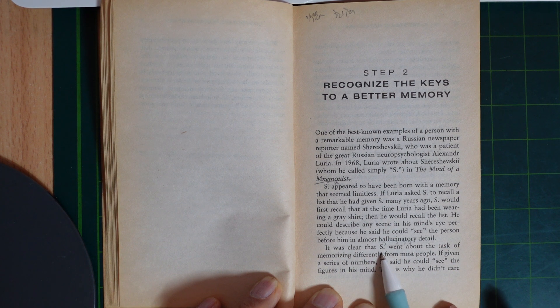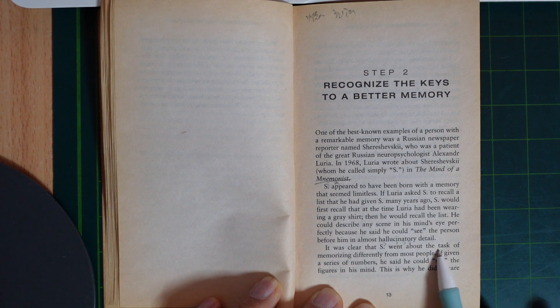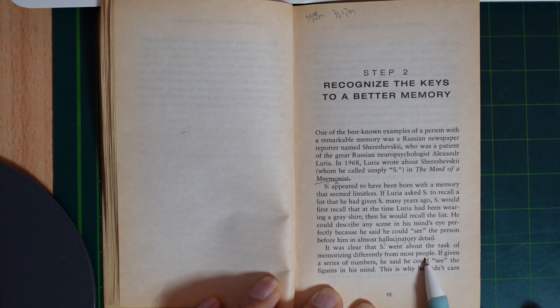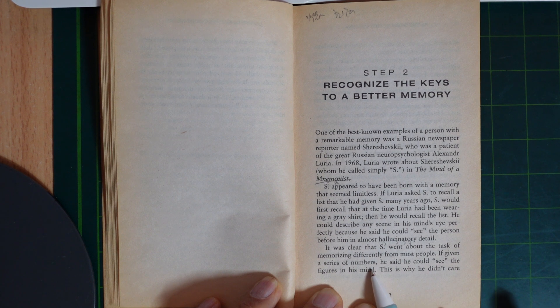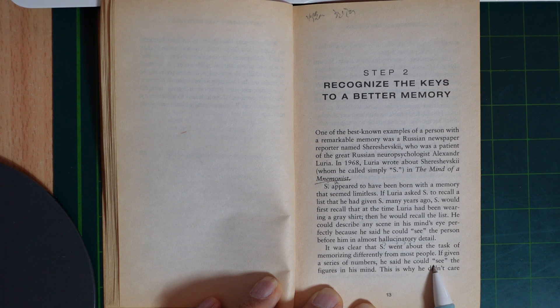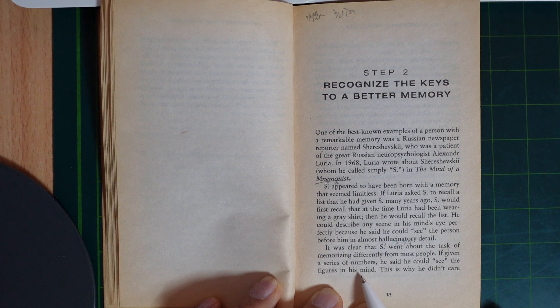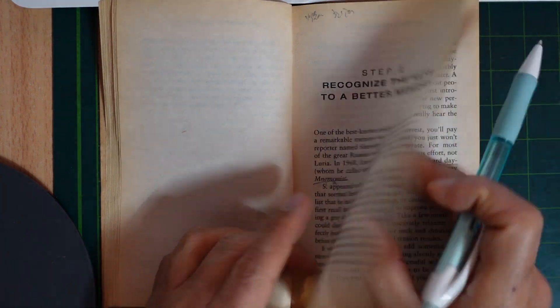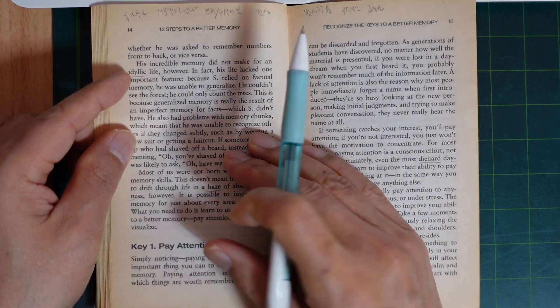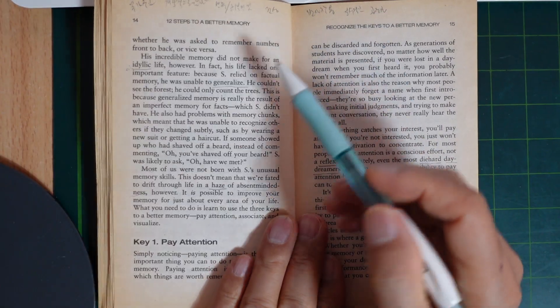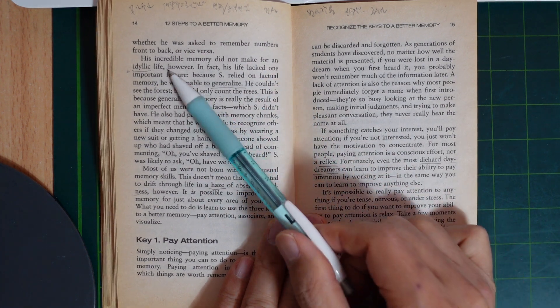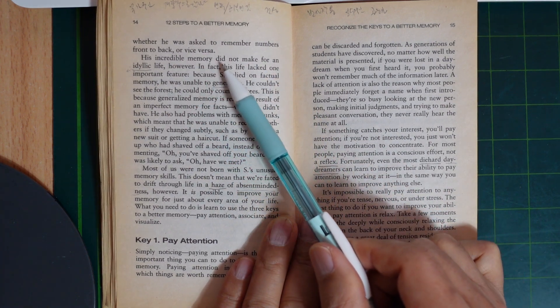It was clear that S went about the task of memorizing differently from most people. If given a series of numbers, S said he could see the figures in his mind. This is why he didn't care whether he was asked to remember numbers front to back or vice versa.